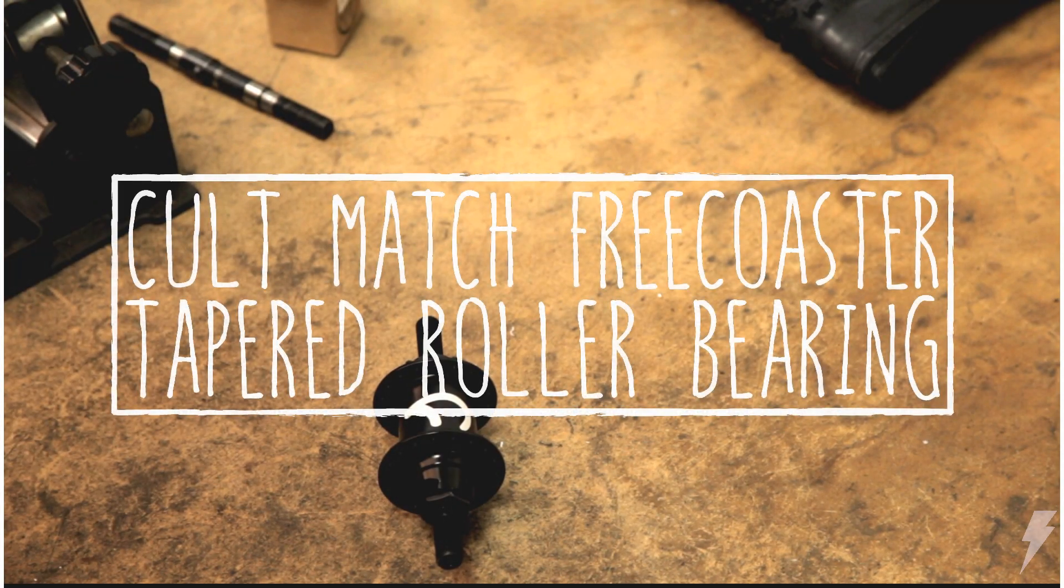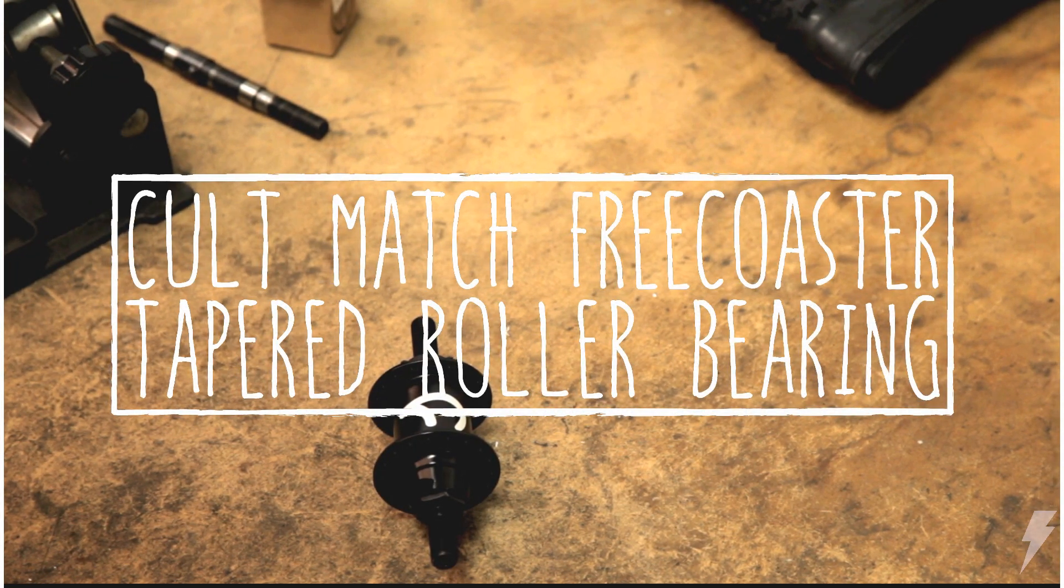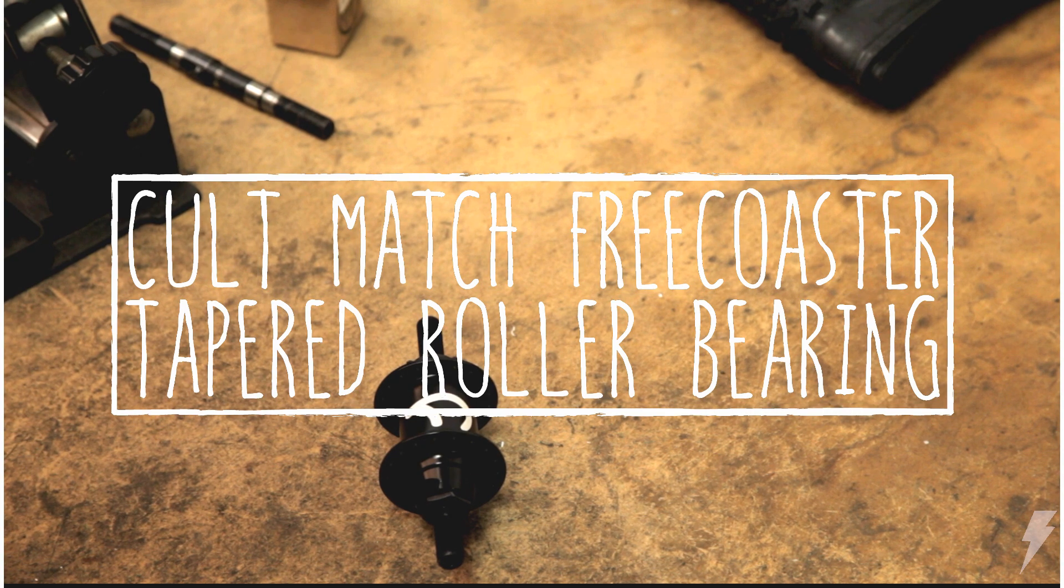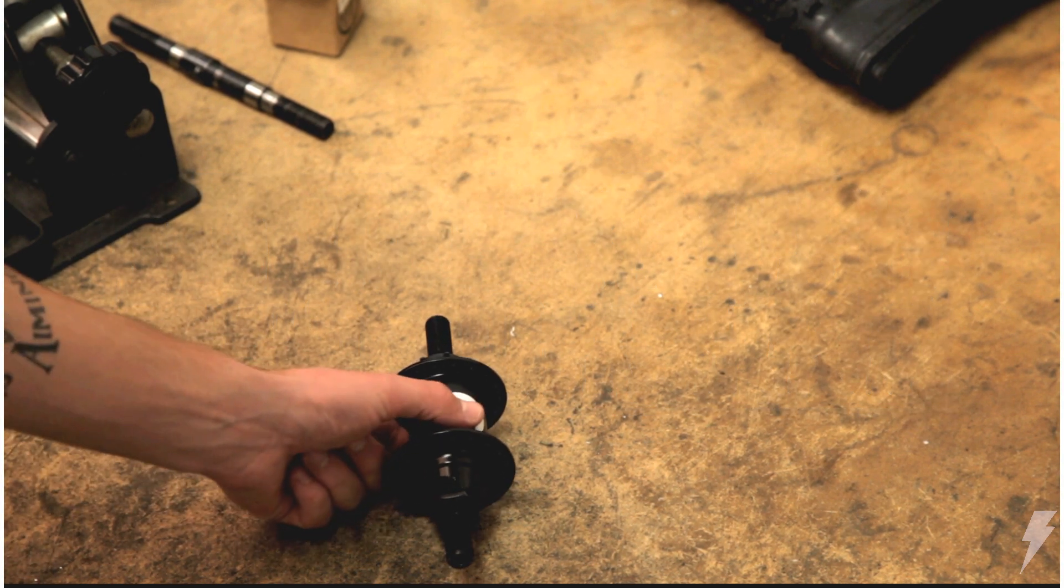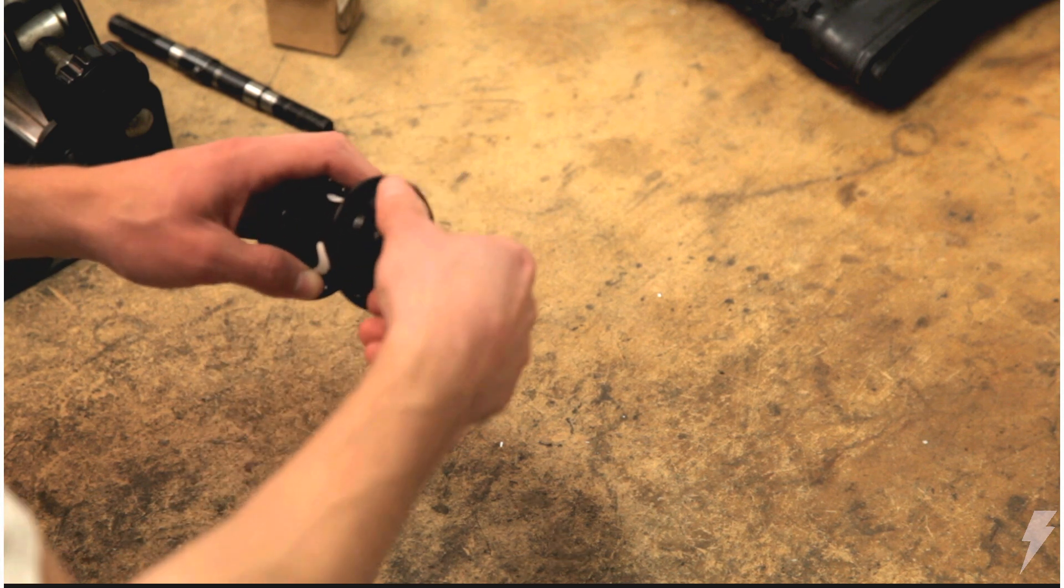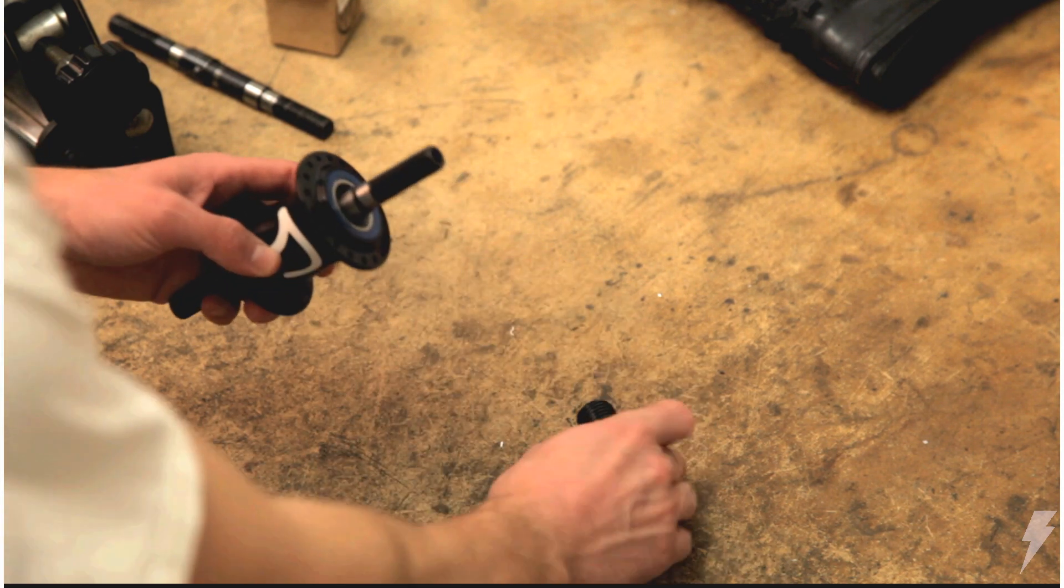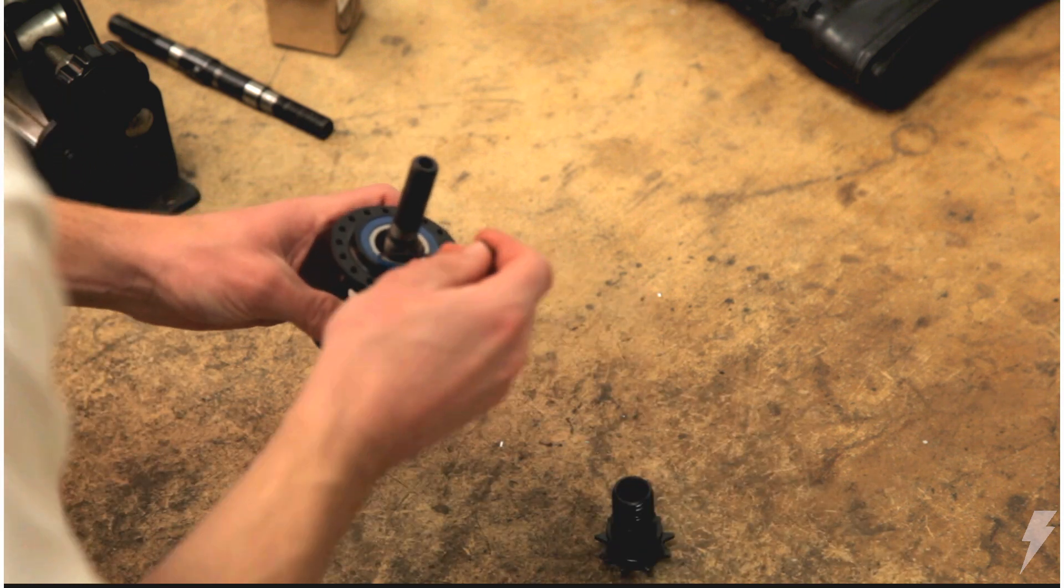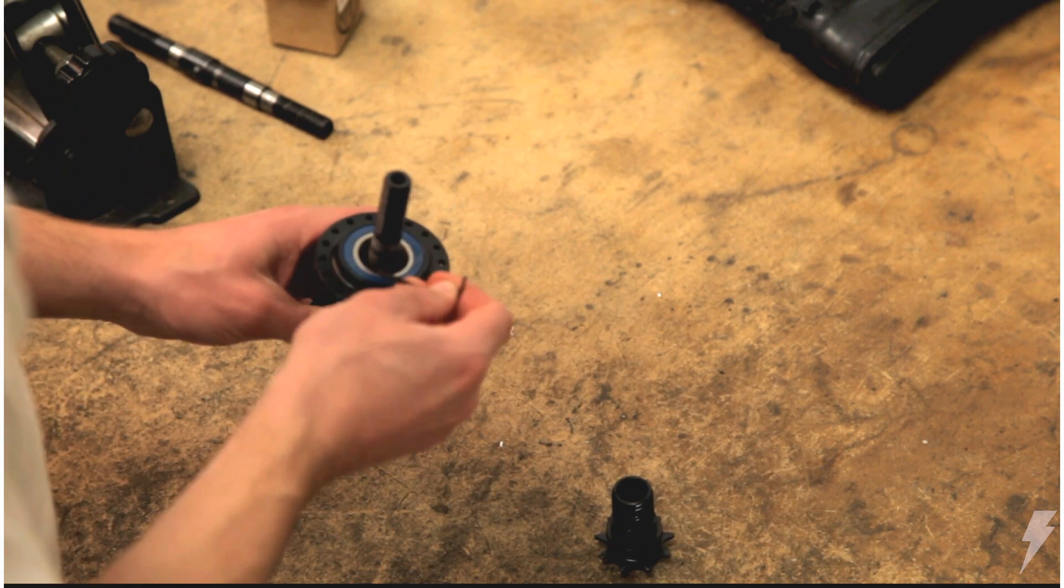While the internals on most clutch based free coasters are very similar, some hubs like this Colt Match require an extra step for proper function. The Colt Match free coaster uses a tapered roller bearing behind the driver for additional side load support. Along with the steps previously shown, this bearing will also need to be re-greased during maintenance.